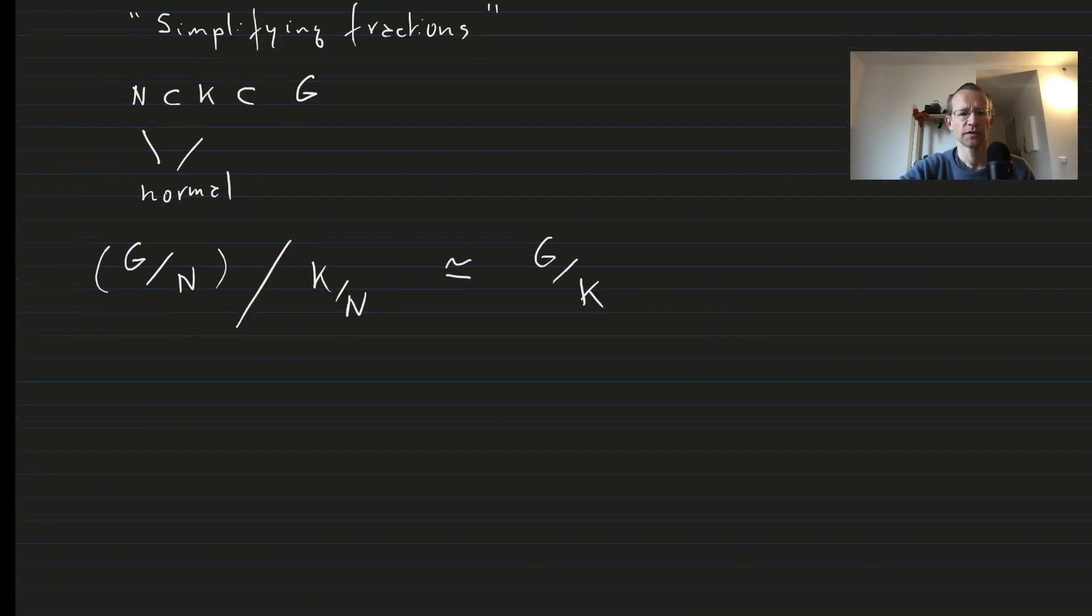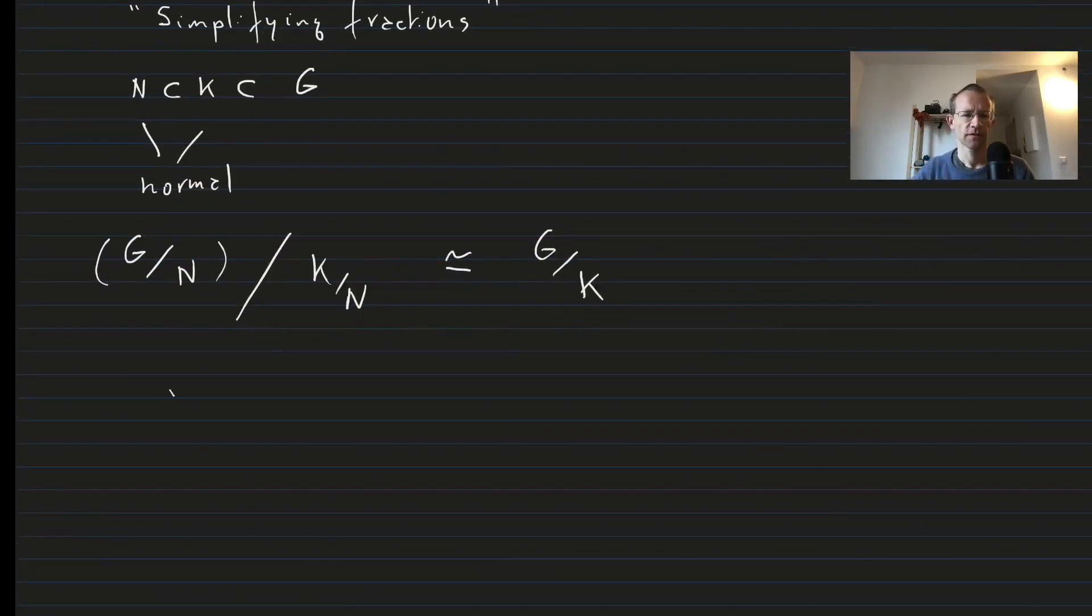So how do we prove this theorem? First of all, let's see how it maps. So an element of the group G over N will be gN, and then of the quotient it will be K over N. So this one maps to gK. This is our bijective map.